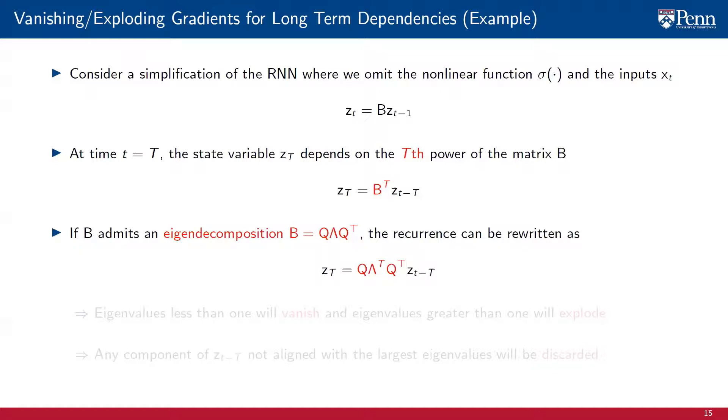If the matrix B can be decomposed into its eigenvalues and eigenvectors as B equals Q lambda Q transpose, with lambda a diagonal matrix made up by the eigenvalues of B and Q an orthogonal matrix made up by the eigenvectors of B, then the recurrence of the hidden state can be written as z_t being equal to Q times lambda to the T-th power times Q transpose times z_{t-T}. Writing the recursion in this form allows us to see that eigenvalues less than 1 will vanish, while those eigenvalues that are greater than 1 will explode, implying that any component of z_{t-T} that is not aligned with the largest eigenvalue will then be discarded.